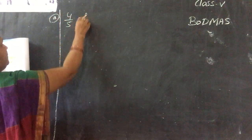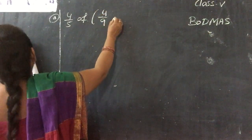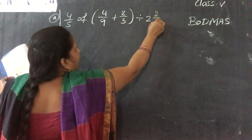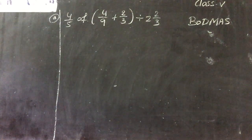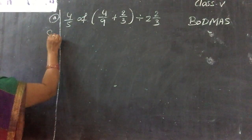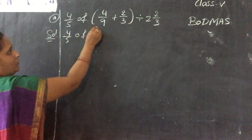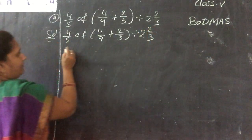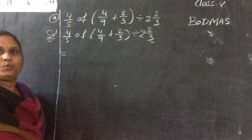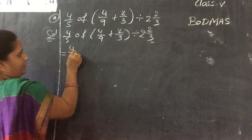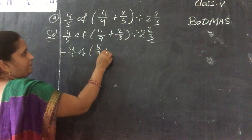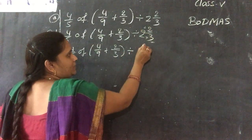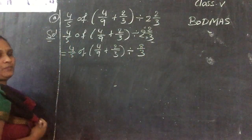The first sum is: 4/5 of 4/9 + 2/3 ÷ 2⅔. We write it out: 4/5 of (4/9 + 2/3) ÷ 2⅔. First, convert 2⅔ into an improper fraction: 2×3 + 2 = 8, so 8/3. Now solve the bracket: 4/9 + 2/3.